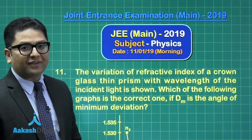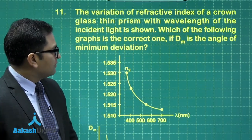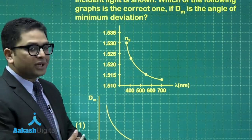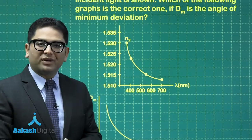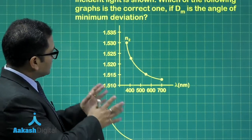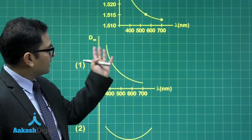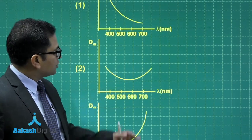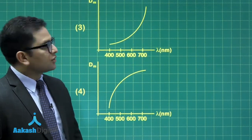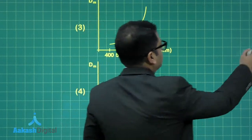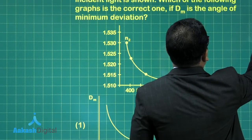The Cauchy relation tells us that with increase in wavelength, the refractive index μ (or n) decreases — this is the known variation pattern. From this given data, we need to plot the variation of minimum deviation with respect to wavelength, choosing from four given options.